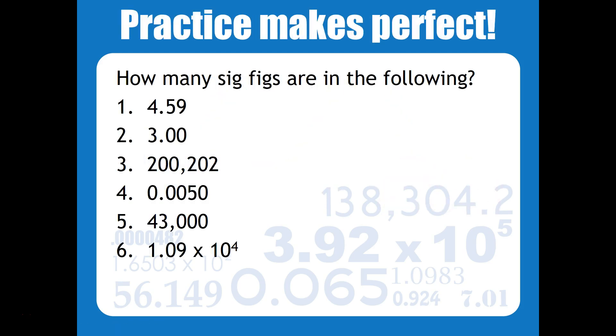Here's some extra practice. Again, you might want to pause the video to try these on your own and see how you do. So in the number 4.59, there is going to be a total of 3 significant figures in that number. In the number 3.00, there is going to be a total of 3 significant figures there.